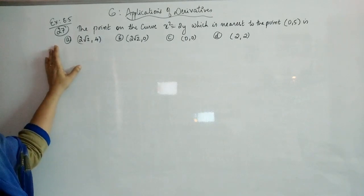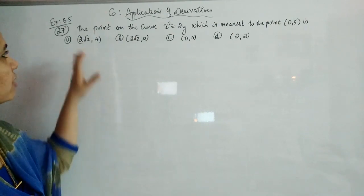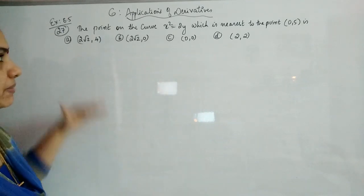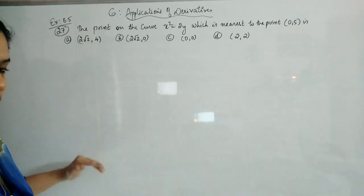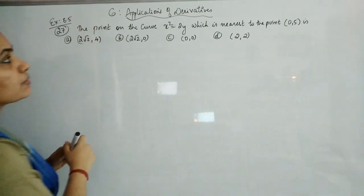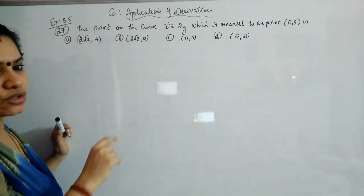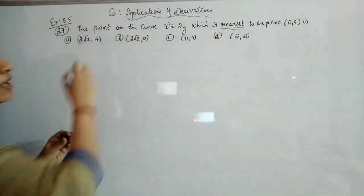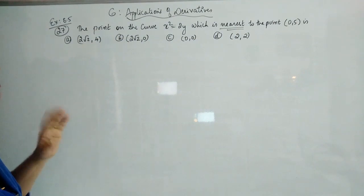Question 27: the point on the curve x² = 2y which is nearest to the point (0, 5). You have been given 4 options. When you have an optional question, I will tell you what to do. What you need to find is the point on the curve nearest to (0,5) — the point that gives minimum distance. So you have to use the distance concept between two points.